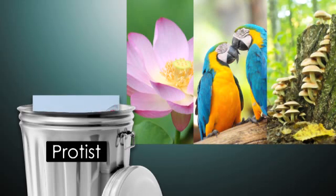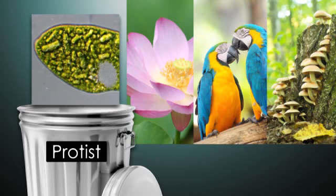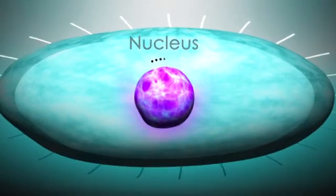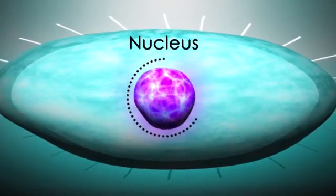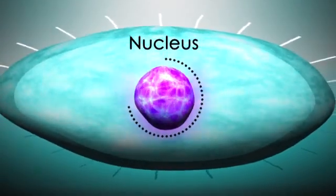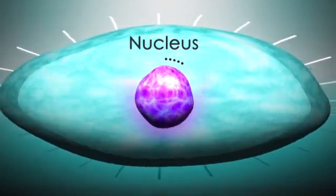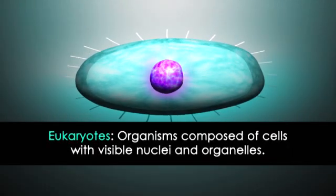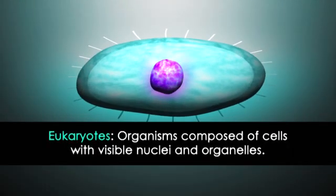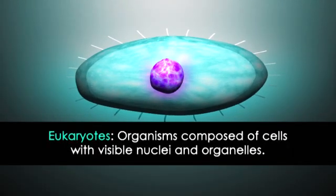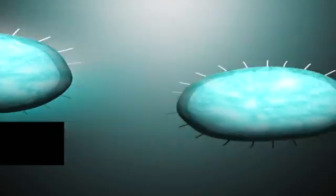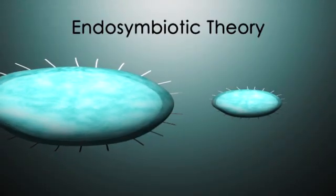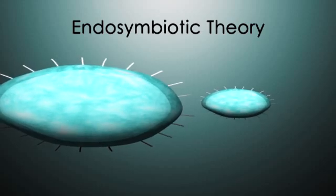Still, there are a few characteristics that most protists share. Because protists have a defined nucleus, they belong to the domain eukarya, and are called eukaryotes.